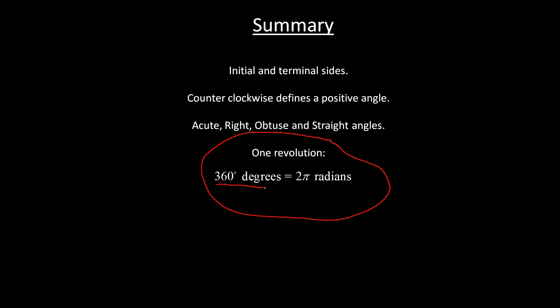One revolution is 360 degrees, which is also 2π radians. This is very useful because it allows us to convert between degrees and radians. There are coterminal angles, angles that have the same initial and terminal side. Then finally, a quick formula at the end there for arc length. And that is the first video lecture.